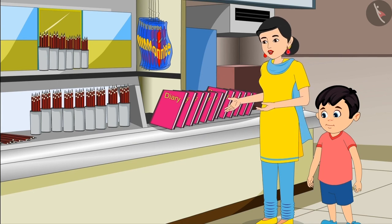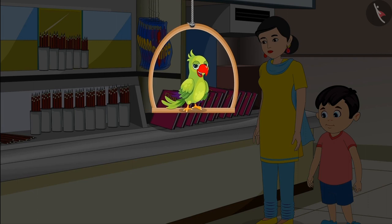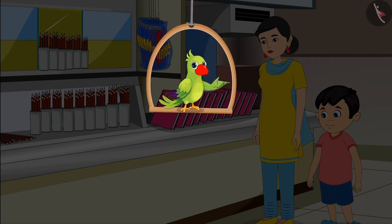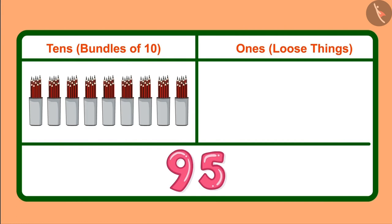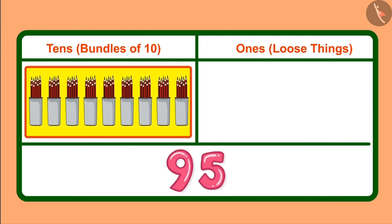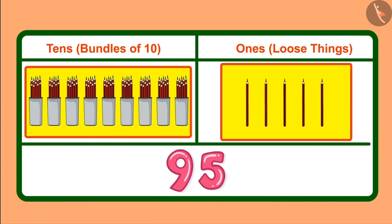So, children, you saw how Choto used bundles and loose pencils to give 95 pencils? He gave 9 bundles of 10 pencils to his mother, which means 9 tens, and together 5 loose pencils, which means 5 ones.